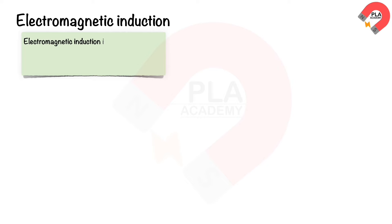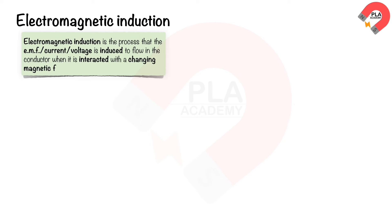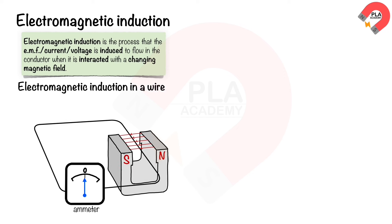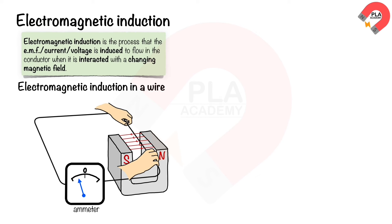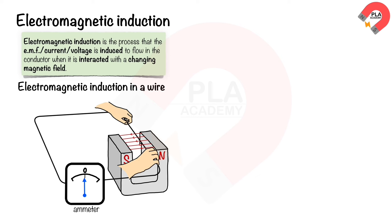Electromagnetic induction: it is the process by which an EMF, current, or voltage is induced in a conductor when it interacts with a changing magnetic field. In a conductor wire: when a wire moves upward through the magnetic field and stops, it induces a current, causing an induced EMF. The ammeter needle deflects to the left and then returns to zero, because the induced current becomes zero when the wire stops.